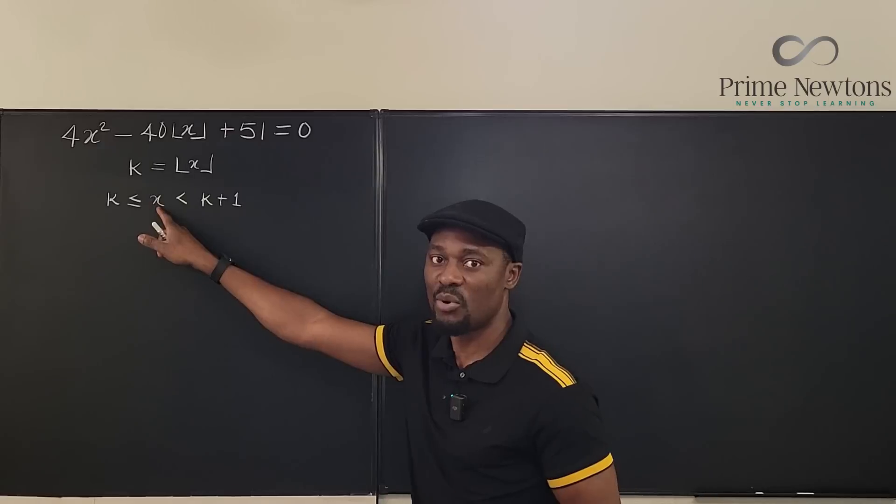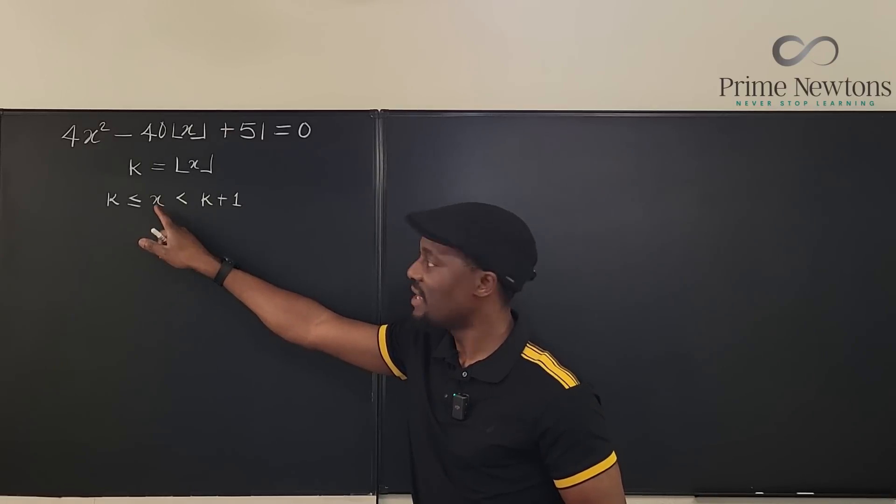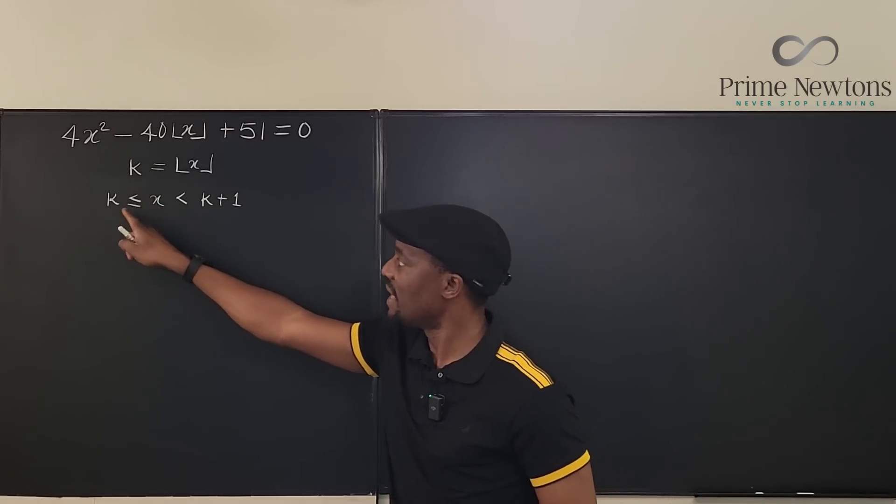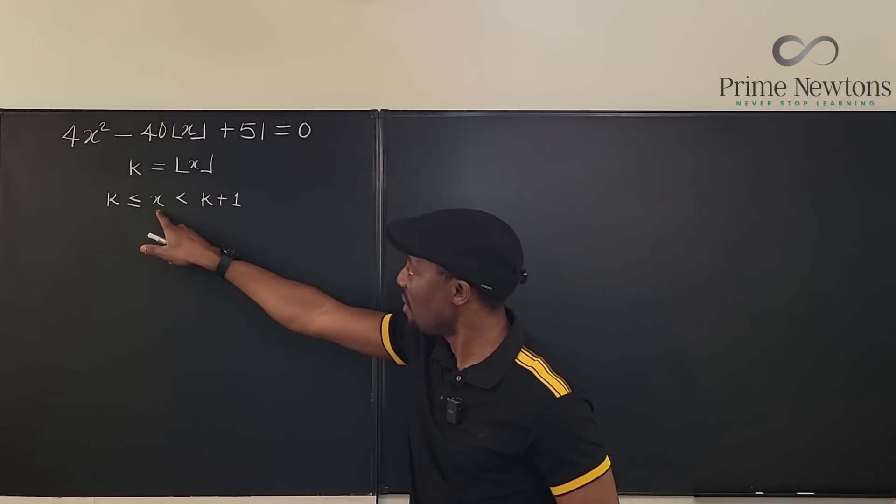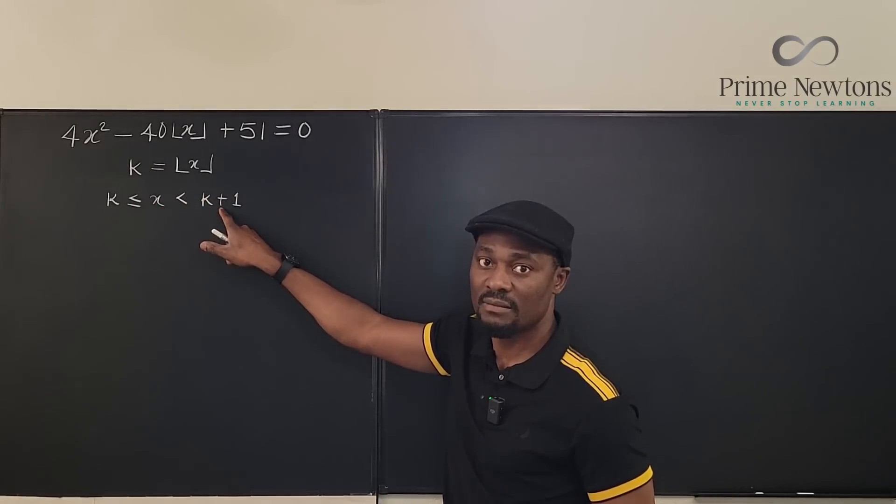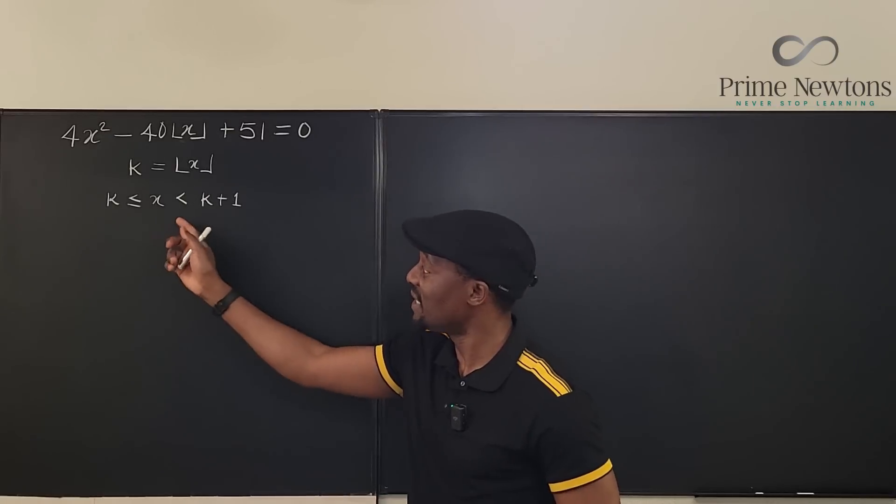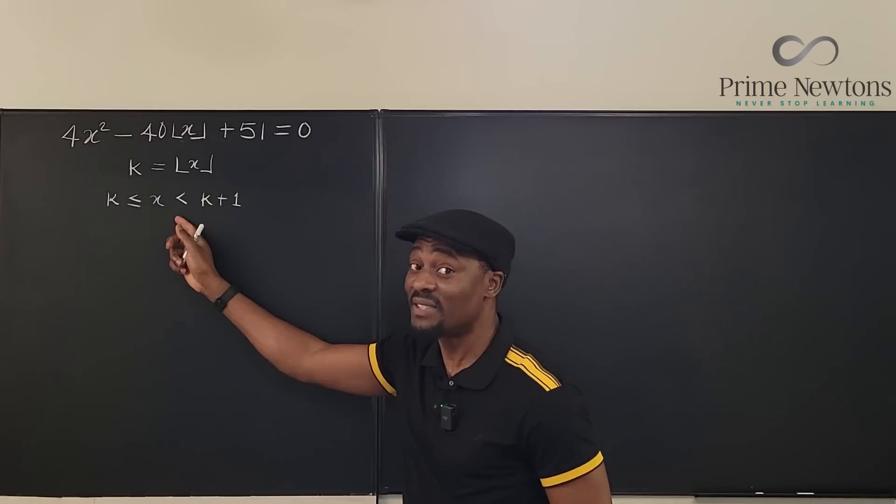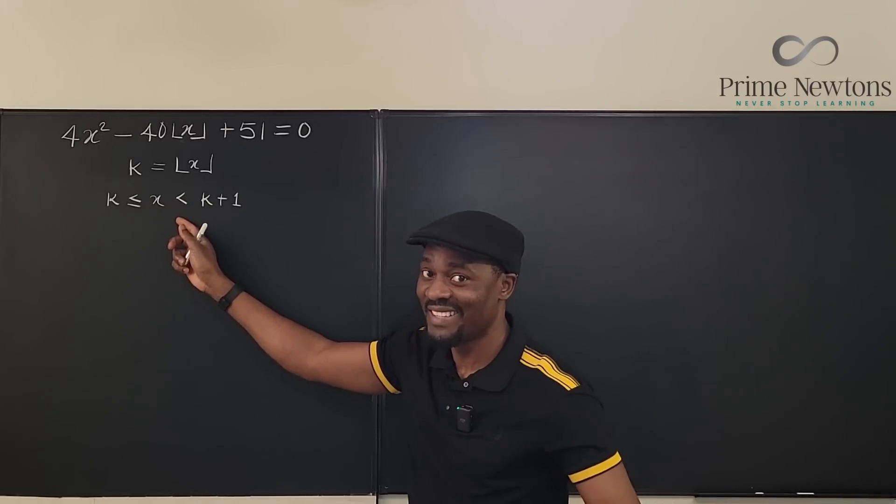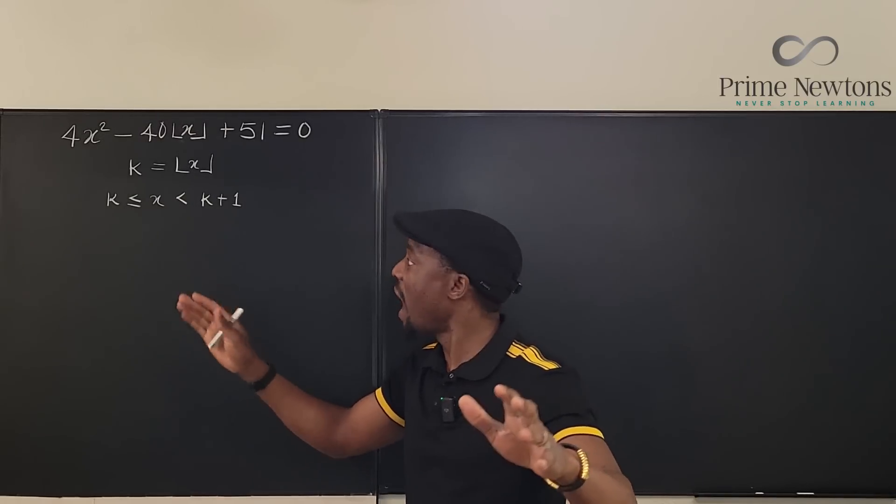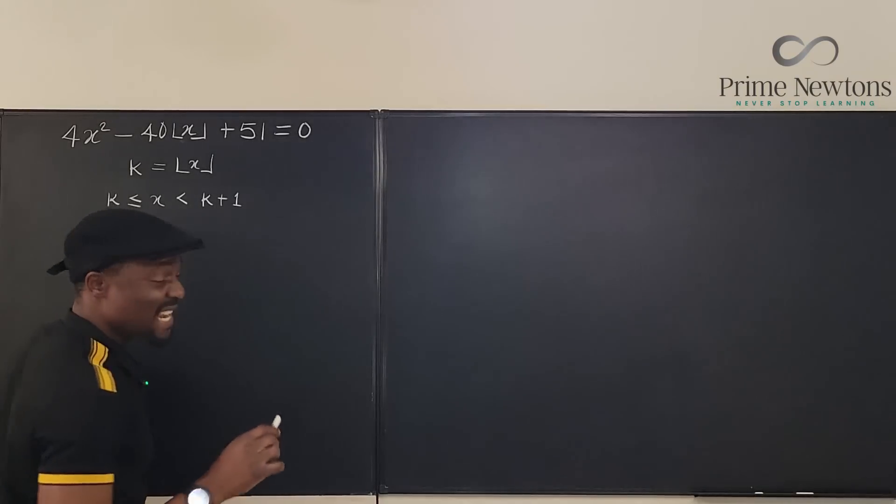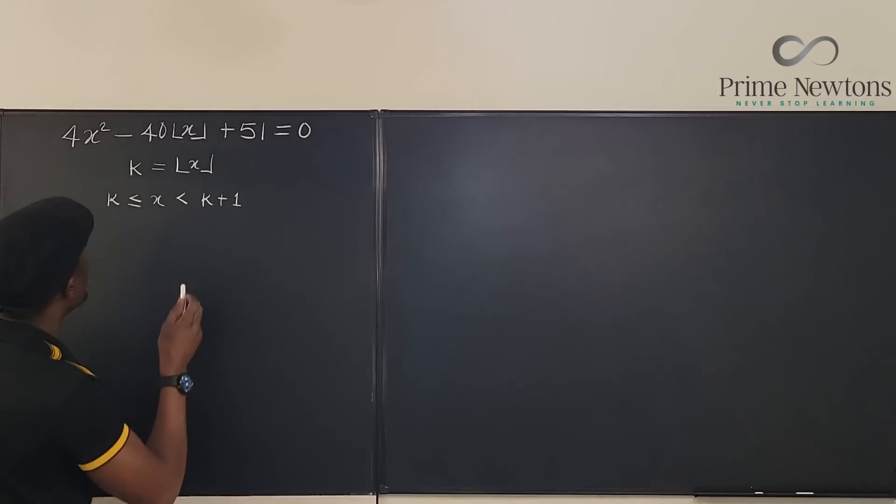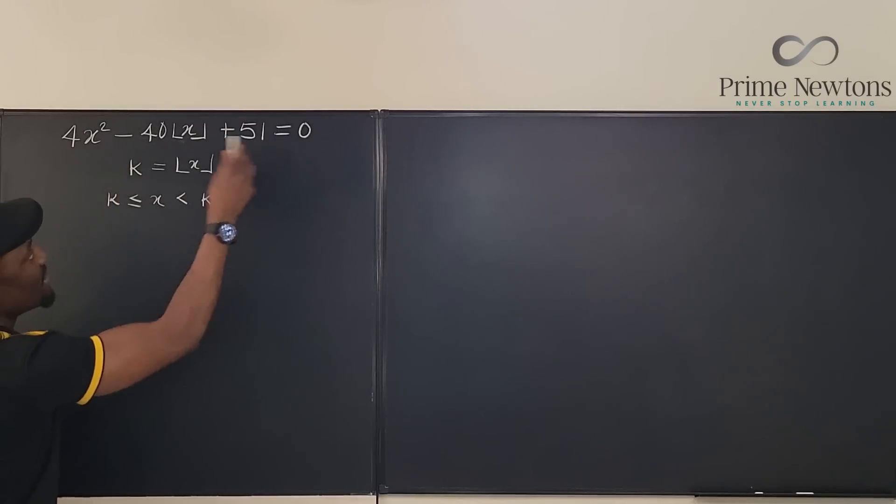Supposing we have this to be 7.7, then this is definitely 7, and it is clear that this number is less than 8. So what can you do with this inequality here? You can do everything with this. And I'm going to show you how this is going to help us.